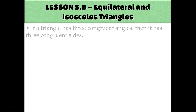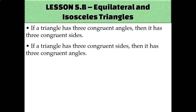In general, if a triangle has three congruent angles, then it must also have three congruent sides. And the same thing the other way around — if a triangle has three congruent sides, then it must also have three congruent angles.